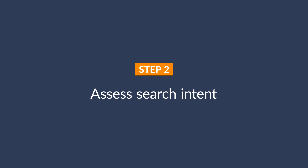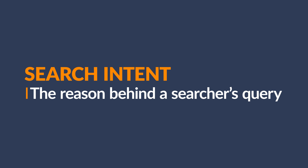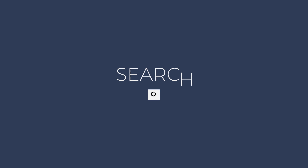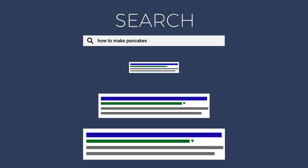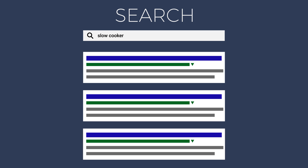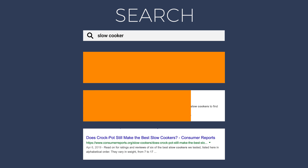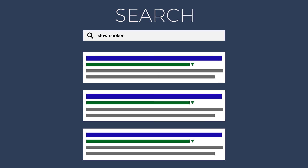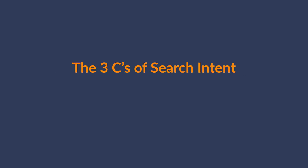Let's move on to step two, which is super important: assessing search intent. Search intent represents the reason behind a searcher's query. For example, if someone searches for 'how to make pancakes,' they probably want recipes. But what about the query 'slow cooker'? Do they want to buy one, read reviews, see a list of recipes, or something entirely different? The good news is that search intent is really easy to identify — just search for the keyword phrase you want to rank for in Google, and the search results will reveal what I like to call the three C's of search intent.